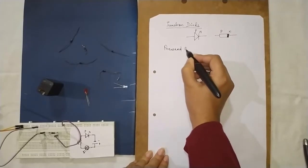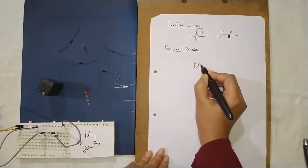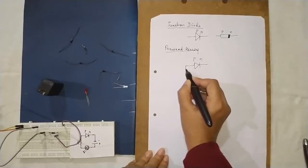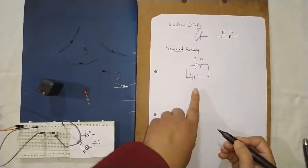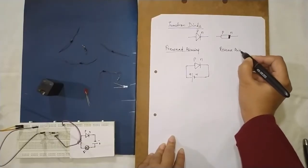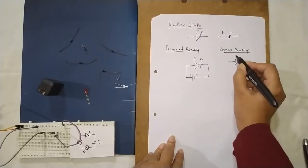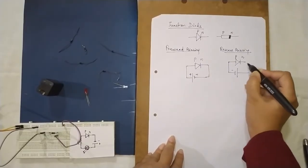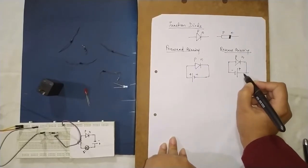Now let us look at forward biasing and reverse biasing. In forward biasing, if the P side of the diode is connected with the positive terminal of the cell, it is termed as forward biased. In reverse biasing, the P side is connected to the negative terminal, or the N side is connected to the positive terminal.